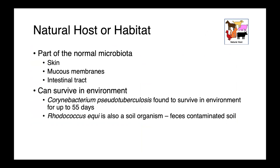All of these organisms are part of the normal microbiota. They're found on the skin, the mucous membranes, and the intestinal tract, although they're all able to survive in the environment. Corynebacterium pseudotuberculosis has been found to survive for up to 55 days, while Rhodococcus equi is not only a member of the normal microbiota but also a soil organism, surviving quite well in soil contaminated with feces.